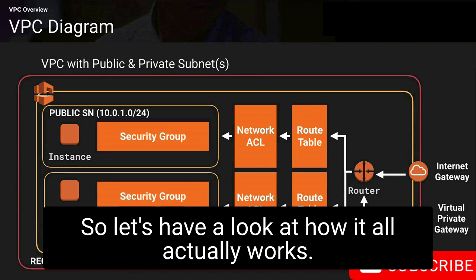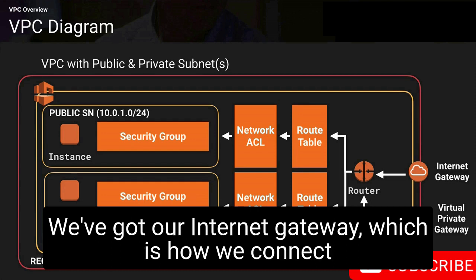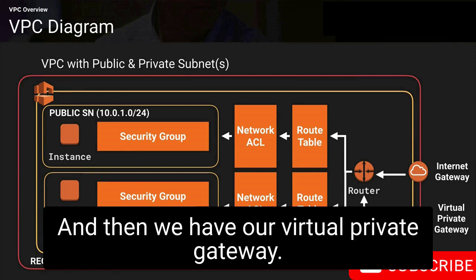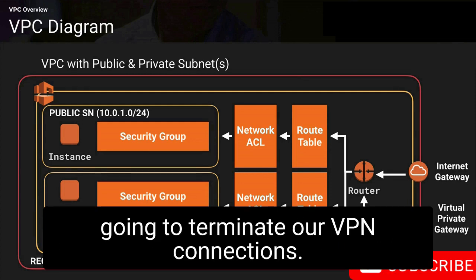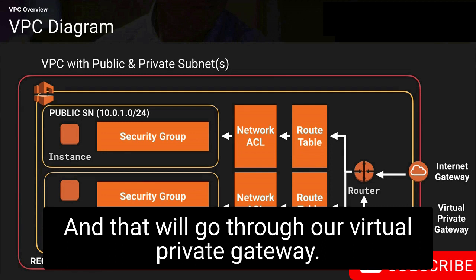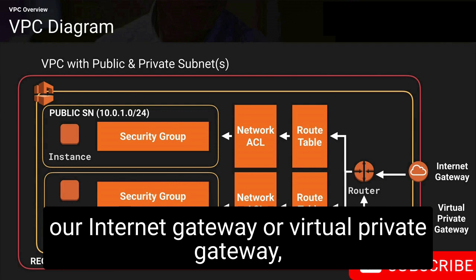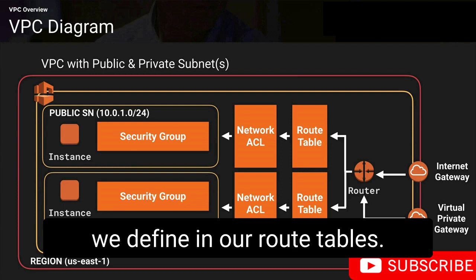There are two routes of entry into our VPC. We have our internet gateway, which is how we connect to the internet (or how the internet connects to us). And then we have our virtual private gateway, where we terminate our VPN connections — for example, a site-to-site VPN between our VPC and our data center. Once traffic comes in through either gateway, it is then routed based on what we define in our route tables.